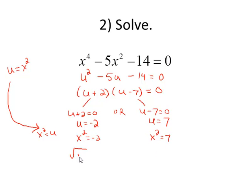Take the square root of both sides. Don't forget the plus or minus when taking the square root of the constant. This gives me plus or minus i root 2 for the first equation. And over here, I can't work with the square root of 7, so I just have plus or minus square root of 7.